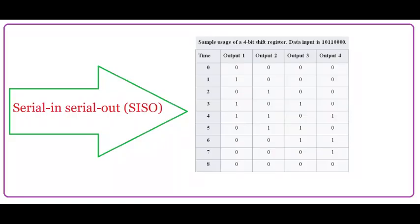Serial in, serial out (SISO) — sample usage of a 4-bit shift register. Data input is 10110000.